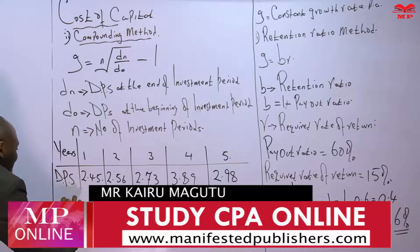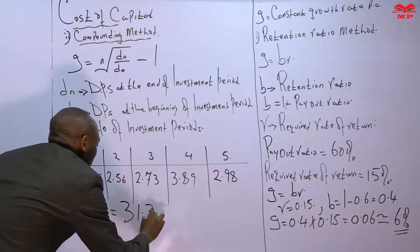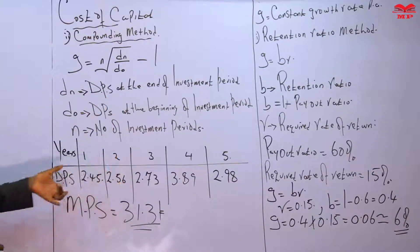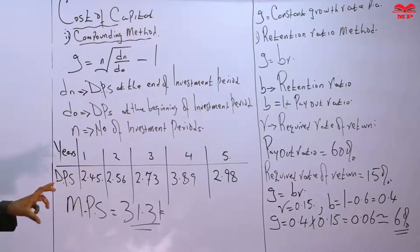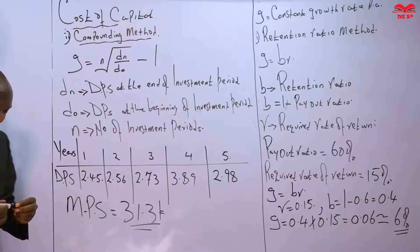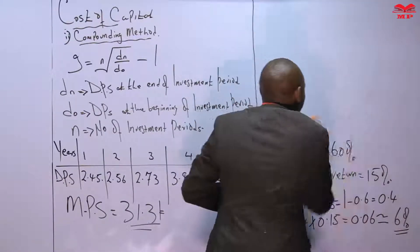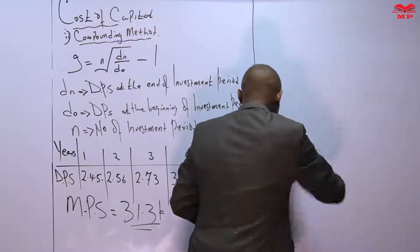Suppose you are told that the company shares are trading at a market price per share of 1.3 shillings for each share. We can use this information to determine the constant growth rate, and also to determine the cost of equity under Gordon's model using the compounding method.